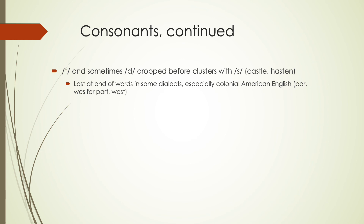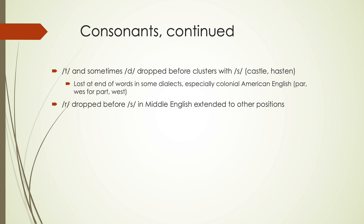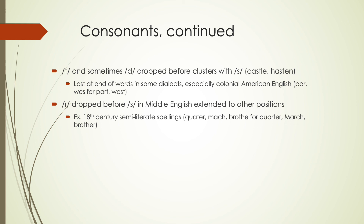T and D sometimes dropped before clusters with S — so 'casel' instead of 'castle,' 'hasten' instead of 'hasten.' It's lost at the end of words in some dialects, especially colonial American English, visible in semi-literate spellings where people wrote how they talked — seeing 'par' for 'part' or 'wes' for 'west.' We also frequently dropped Rs, especially before S in Middle English, and this was extended to other words and positions. By the 18th century this is seen in semi-literate spellings and still exists in some dialects today — 'quader,' 'match,' 'broder' for 'quarter,' 'march,' 'brother' — emulating something like a Boston dialect.